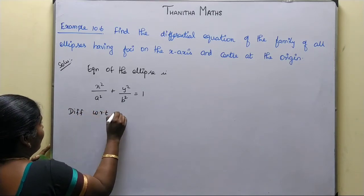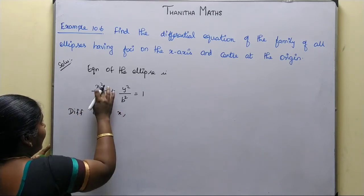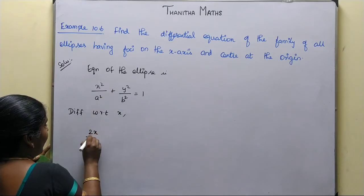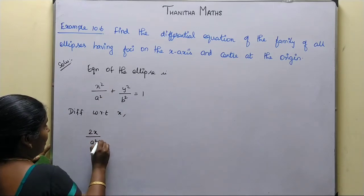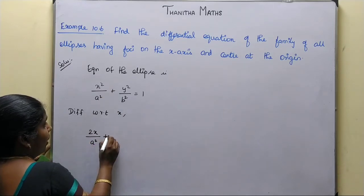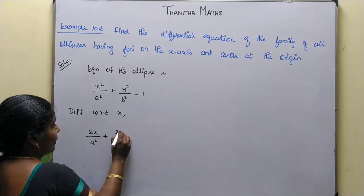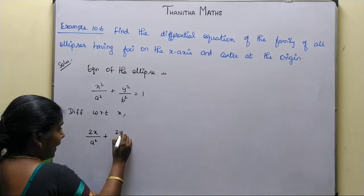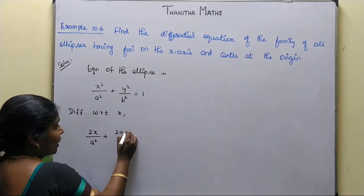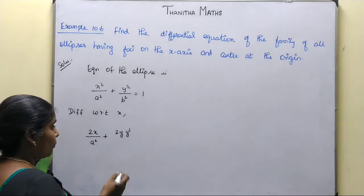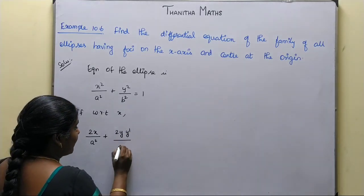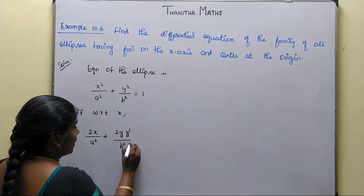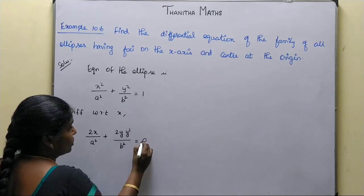First time we differentiate: x-squared differentiates to 2x divided by a-squared, which is constant. Plus, y-squared differentiates to 2y times dy by dx divided by b-squared equal to 0.